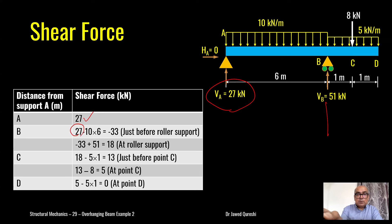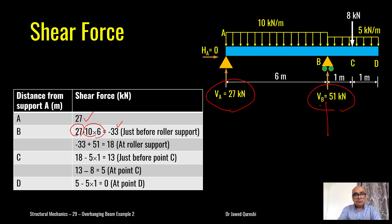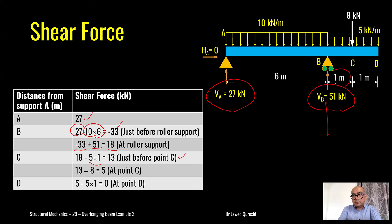Just before the roller support: 27 (reaction at A) minus the total UDL, which is 10 × 6 = 60, giving −33 kilonewtons. At the roller support, add the reaction of 51 kilonewtons: −33 + 51 = +18 kilonewtons. Then moving to point C, just before the point load: 18 minus the UDL of 5 × 1 = 5 gives 13 kilonewtons.